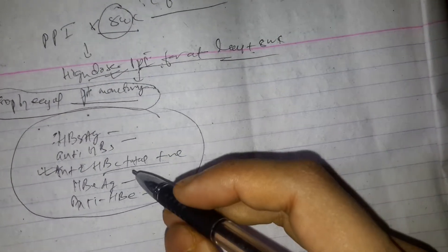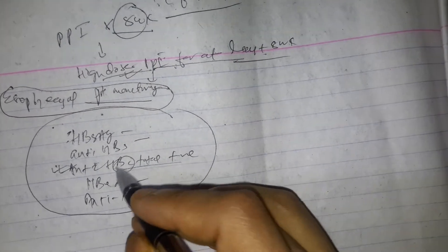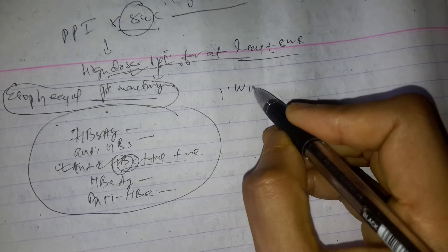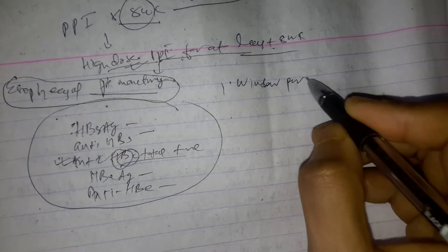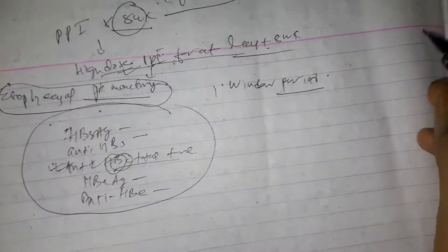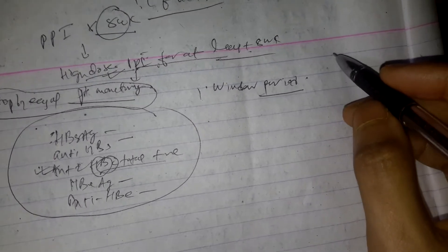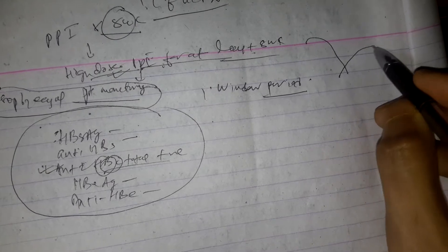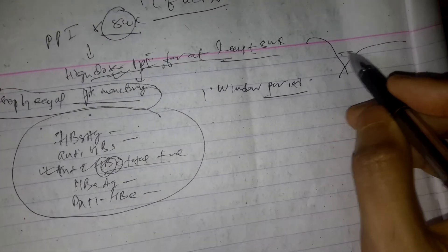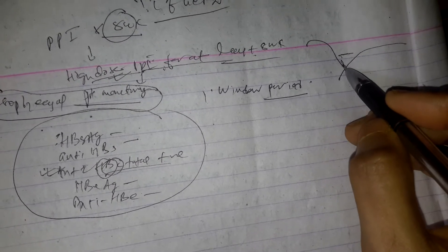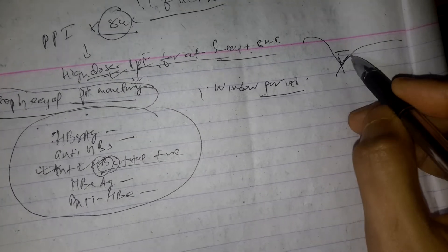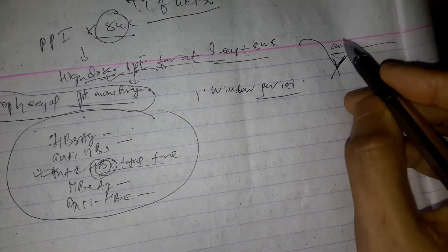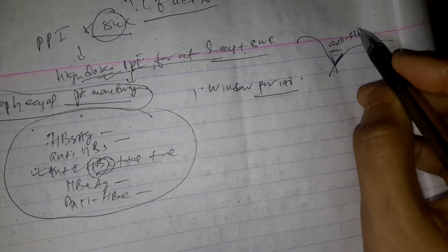So there are only three situations in which anti-HBc is seen. One is during the window period of acute hepatitis B virus infection, when HBsAg has fallen but anti-HBs has not yet risen.